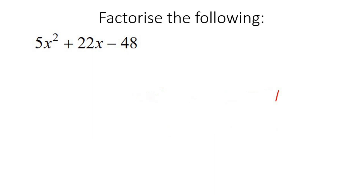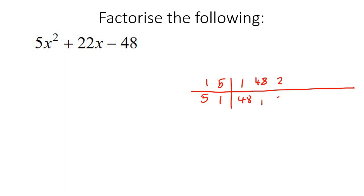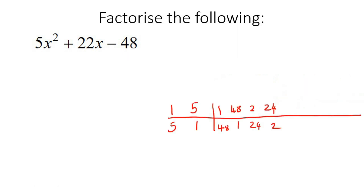For this one, there's no common factor. 48 is a big number, so we list factors of 5: 1 times 5, 5 times 1. And factors of 48: 1 times 48, 48 times 1, 2 times 24, 24 times 2, 3 times 16, 16 times 3, 4 times 12, 12 times 4, 6 times 8, 8 times 6. We're trying to get close to 22, so we'd never choose 5 and 48 — that gives 240. It takes a bit of time, but it gets faster as you go.